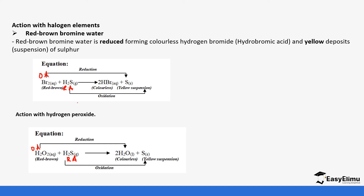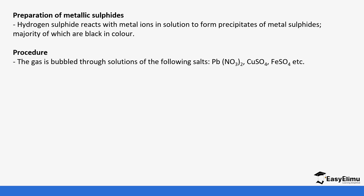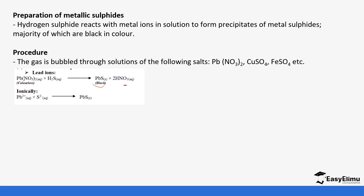In all these reactions, hydrogen sulfide is the reducing agent, similar to sulfur dioxide. When preparing metal sulfides, hydrogen sulfide is reacted with metal ions in solution and precipitates are formed, most of which are black. For example, bubbling hydrogen sulfide through a solution containing lead ions — lead nitrate reacts with hydrogen sulfide to form lead sulfide and nitric acid. There is an interchange of ions occurring, which helps you see how the equation is formed.